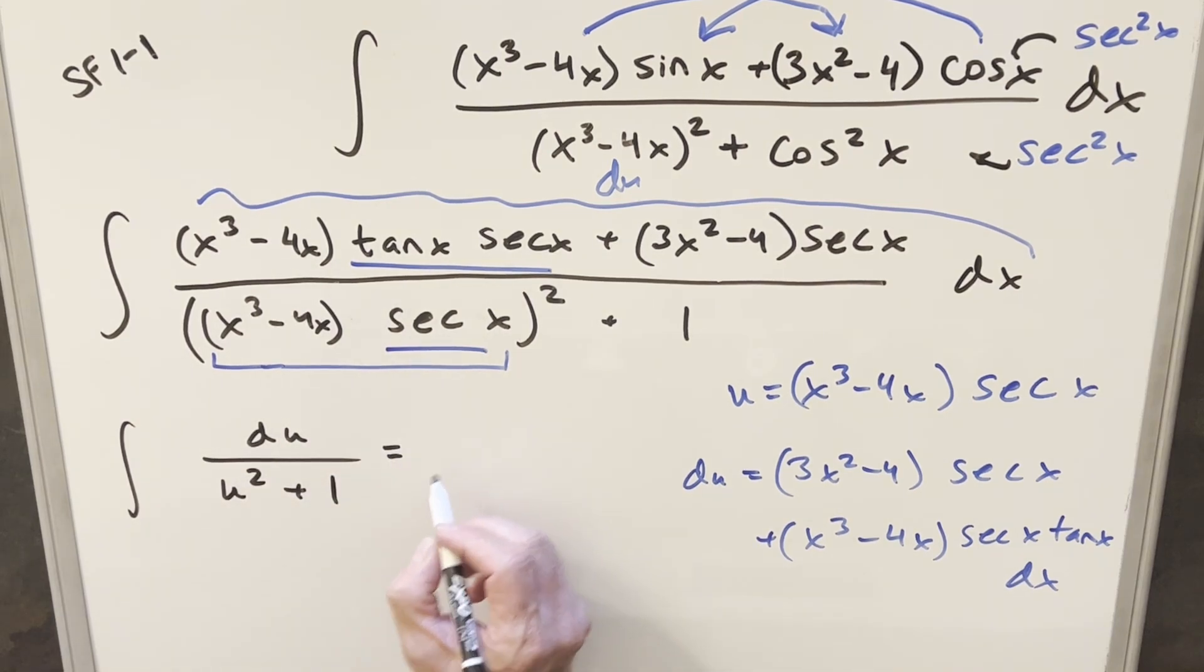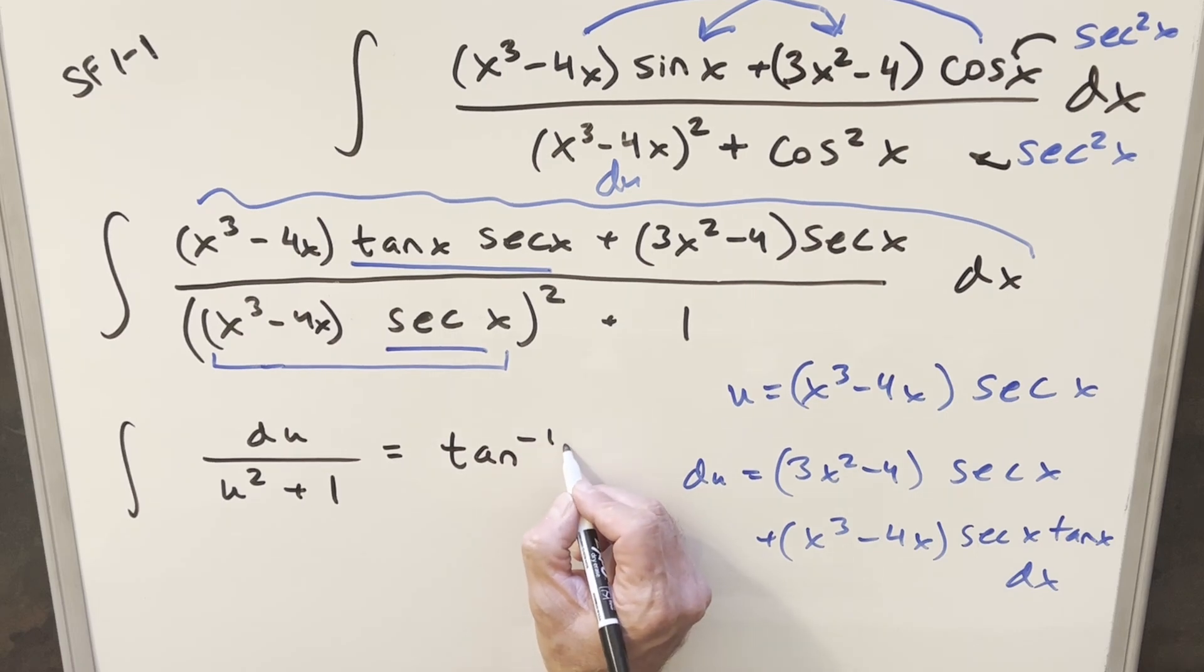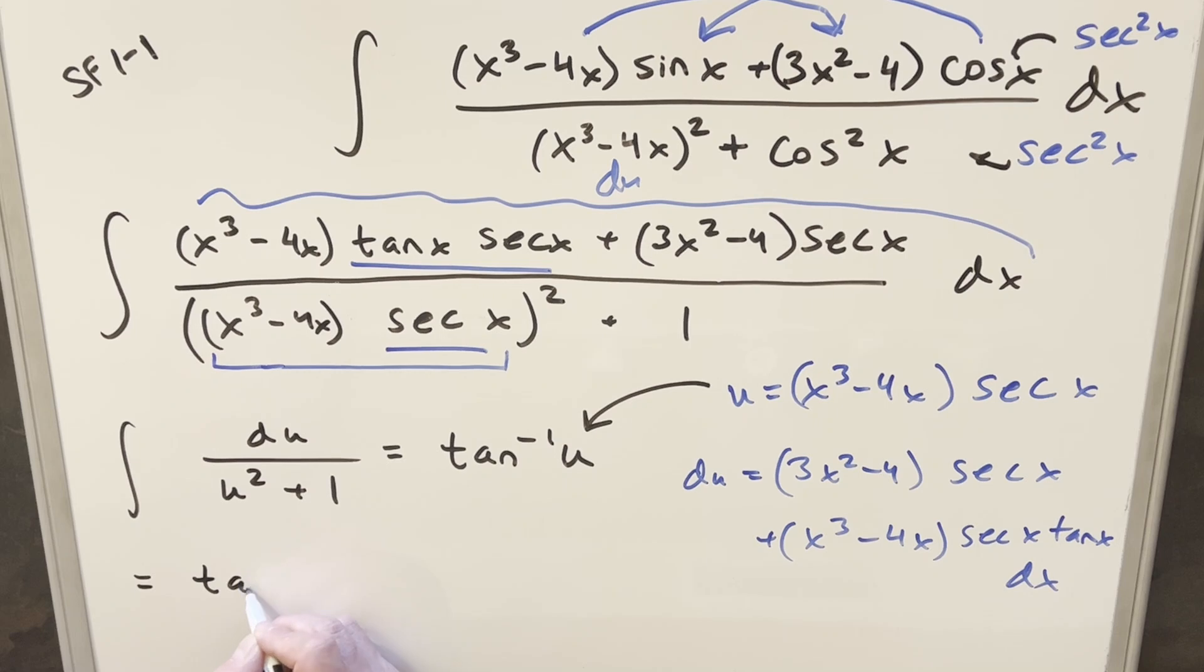This becomes u squared plus 1. We know how to do this. This is just arctan. So integrating here, we get arctan of u, back substitute it. And what we get is arctan of x cubed minus 4x times secant x. And for the indefinite integral, I can just add the plus c in there, and that's going to be our answer to the indefinite integral.